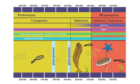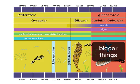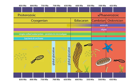The Cambrian boundary represents the transition from a world where life was mostly, though not entirely, microscopic, to a world where large animals and algae dominated the world's oceans.